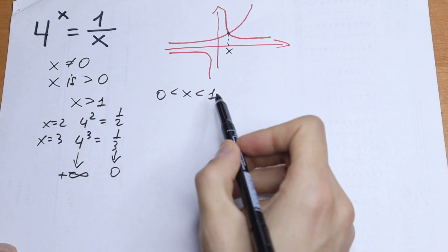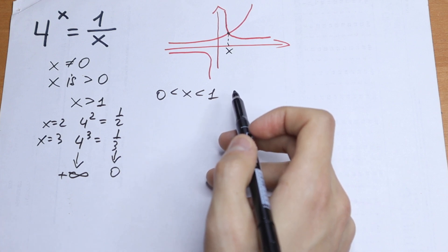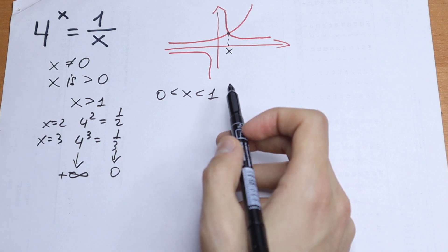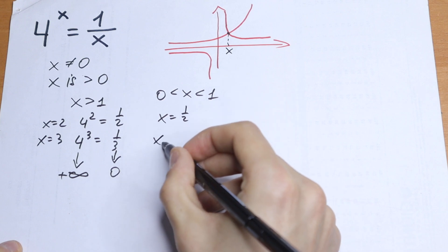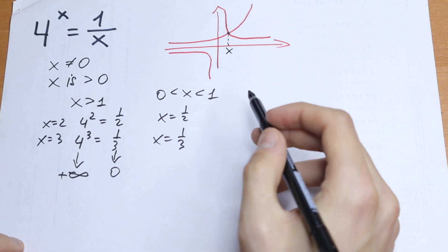x is between 0 and 1. So let's try to find a root. Let's try to check a root. So x for example equal to 1 half, x equal to 1 third. So obvious roots. Let's check it real quick.